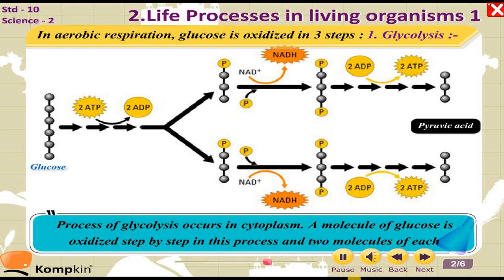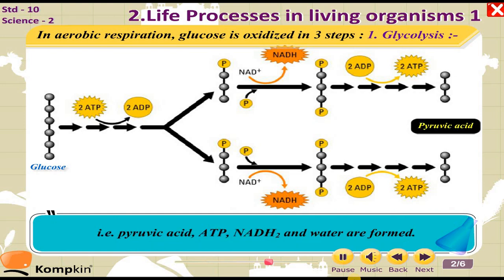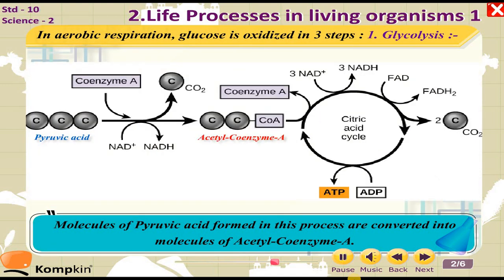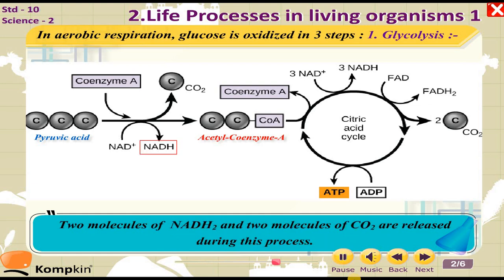A molecule of glucose is oxidized step by step in glycolysis, and two molecules each of pyruvic acid, ATP, NADH₂, and water are formed. The molecules of pyruvic acid formed in this process are then converted into molecules of acetyl coenzyme A, releasing two molecules of NADH₂ and two molecules of CO₂.